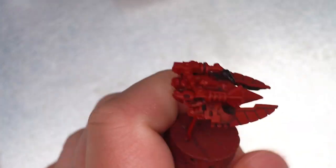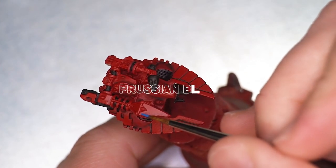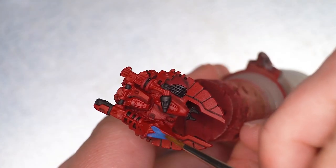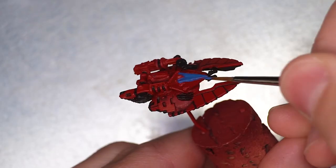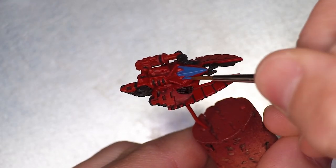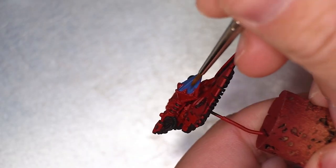Now if the Abaddon black that you're using is giving you tricky coverage like it was for me, mix in a bit of another black paint. For example I use Vallejo black paint in the end, 50-50 mix with Abaddon black and that really improved the coverage when I was working on this model.